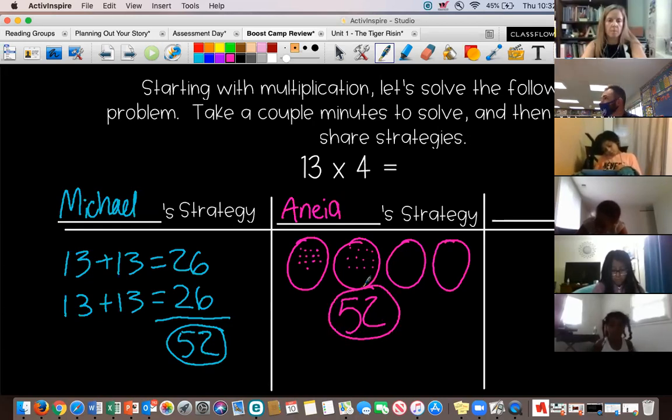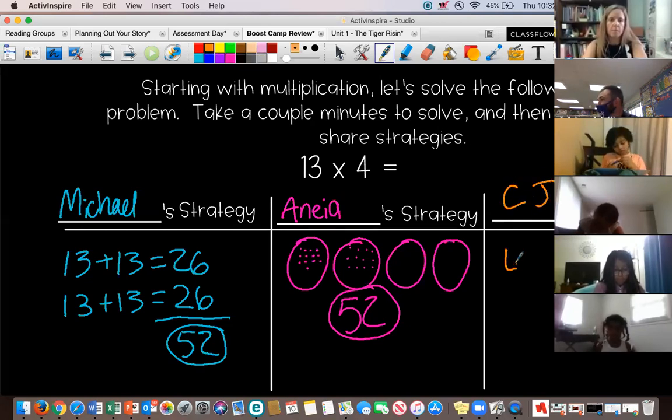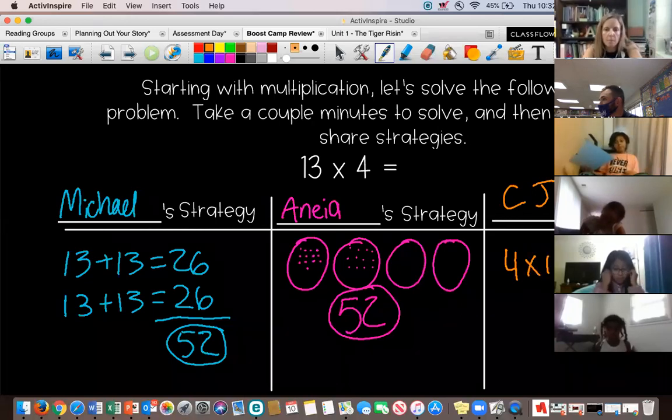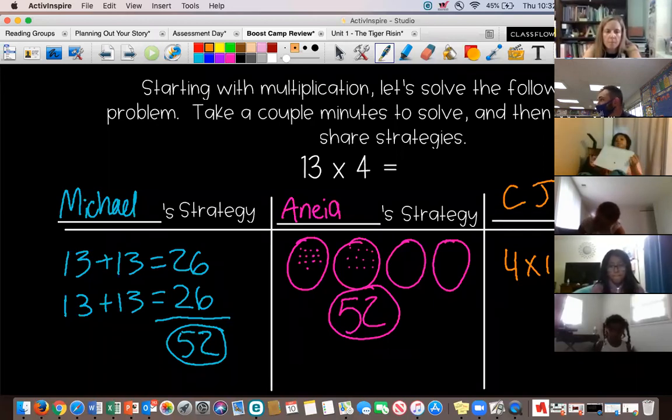CJ, what did you do? I took four times 11. Okay, and what is four times 11? 44. Then what did you do? And then I took 44 and added four to get 48. 48. And then what? And then I added four to 48 to get 52.